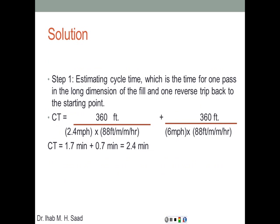First, we calculate cycle time: distance over speed forward plus distance over speed backward. The distance is 360 feet in both directions. Since 360 is in feet and speed is in mph, we use the conversion factor of 88 feet per minute per mph. Cycle time equals 360 divided by (2.4 × 88) plus 360 divided by (6 × 88), which gives 1.7 minutes forward plus 0.7 minutes backward, for a total cycle time of 2.4 minutes.